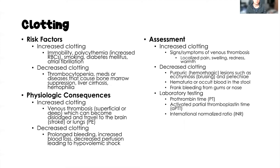Decreased clotting risk factors include thrombocytopenia — not having enough platelets — which can result from meds or diseases that cause bone marrow suppression, such as chemotherapeutic drugs, radiation, or treatments for leukemia. Liver cirrhosis is another risk factor, since clotting factors are produced in the liver — any liver dysfunction means decreased clotting factors. And then of course, a genetic condition such as hemophilia, which is an X-linked recessive genetic disorder. I have a video on my channel about genetics where I discuss hemophilia in more detail — linked in the description below.